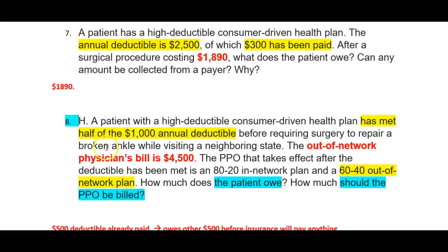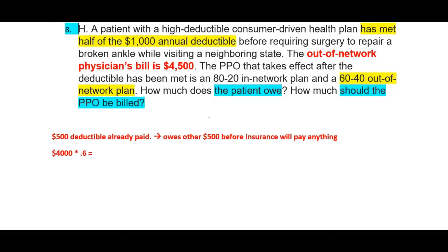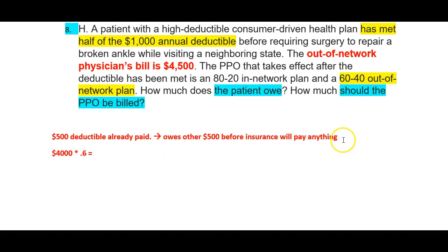For the last one, a patient with a high-deductible consumer-driven health plan has met half of the $1,000 annual deductible before requiring surgery to repair a broken ankle while visiting a neighboring state. The out-of-network physician's bill is $4,500. The PPO takes effect after the deductible has been met at an 80/20 in-network plan and a 60/40 out-of-network plan. They've already met half of the deductible, so they've paid $500. Right off the top, the patient already owes another $500 before insurance pays anything.